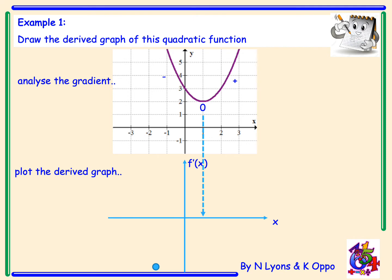The turning point becomes a root — I draw a line going down. Before that root the graph is negative, so it's below the x-axis. After that root the gradient is positive, so it's above the x-axis. It goes negative, zero, positive. That just looks like a straight line.